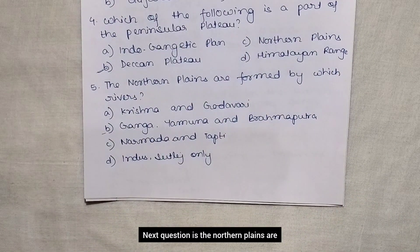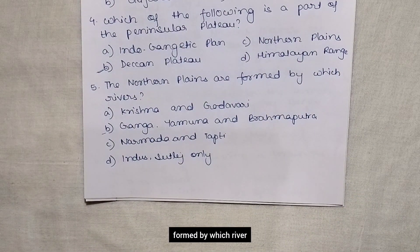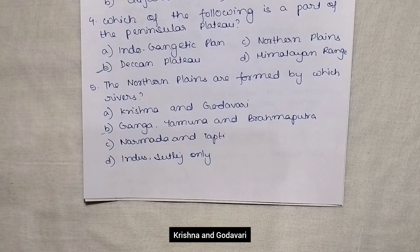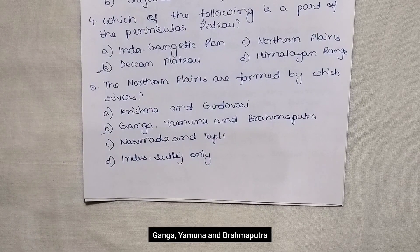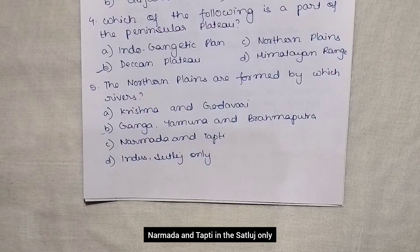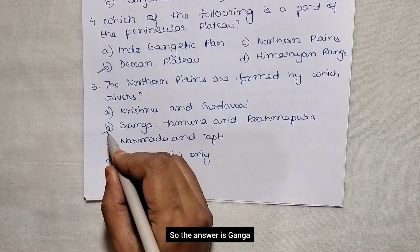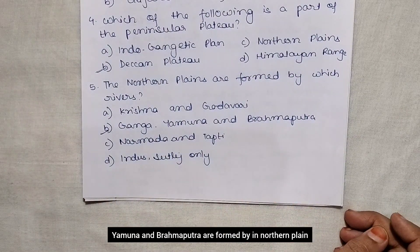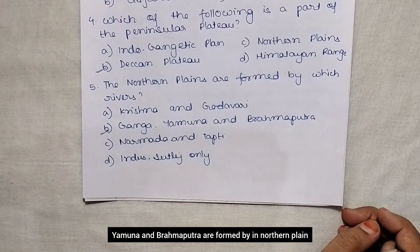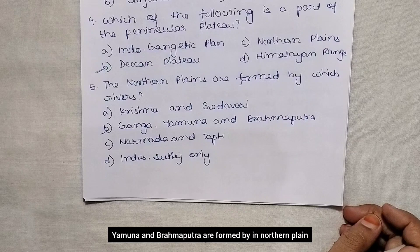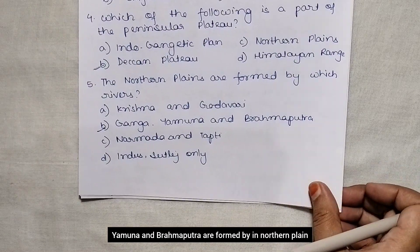The next question is: the northern plains are formed by which river? The options are Krishna and Godavari, Ganga, Yamuna and Brahmaputra, Narmada and Tapti, or Indus and Satluj only. The answer is Ganga, Yamuna, and Brahmaputra form the northern plain.